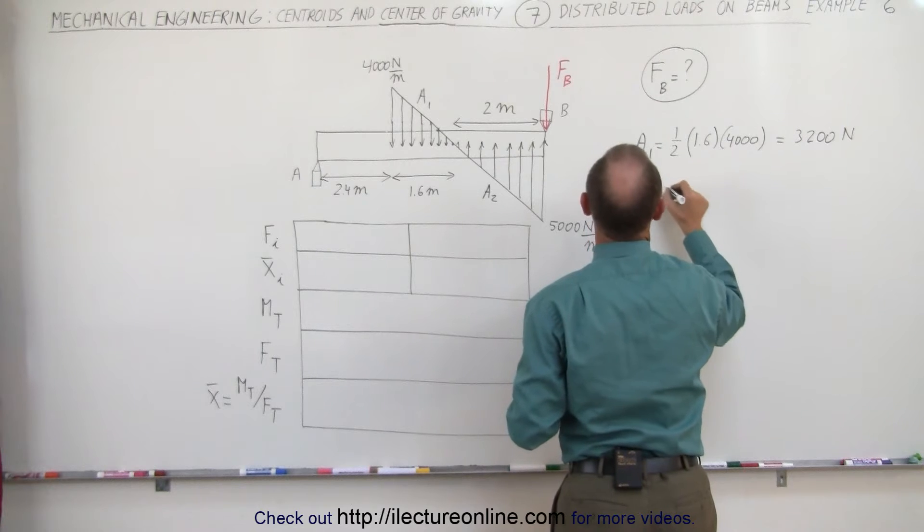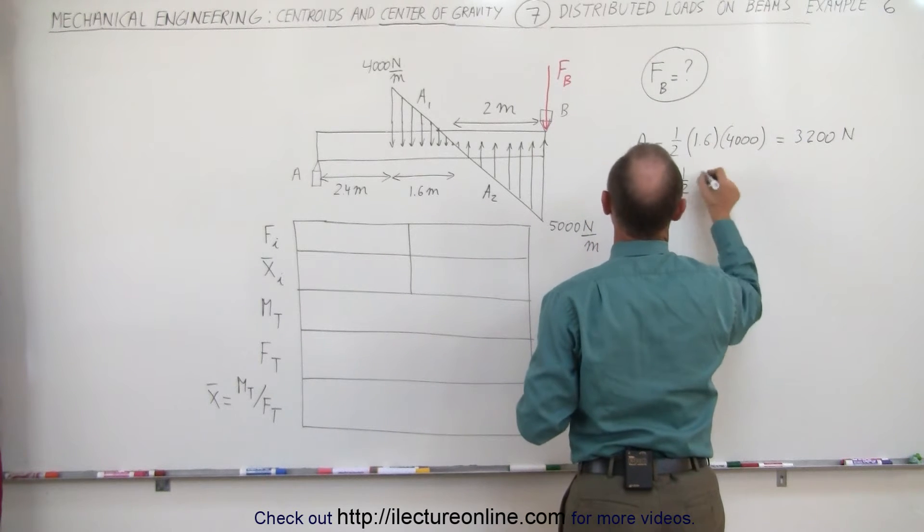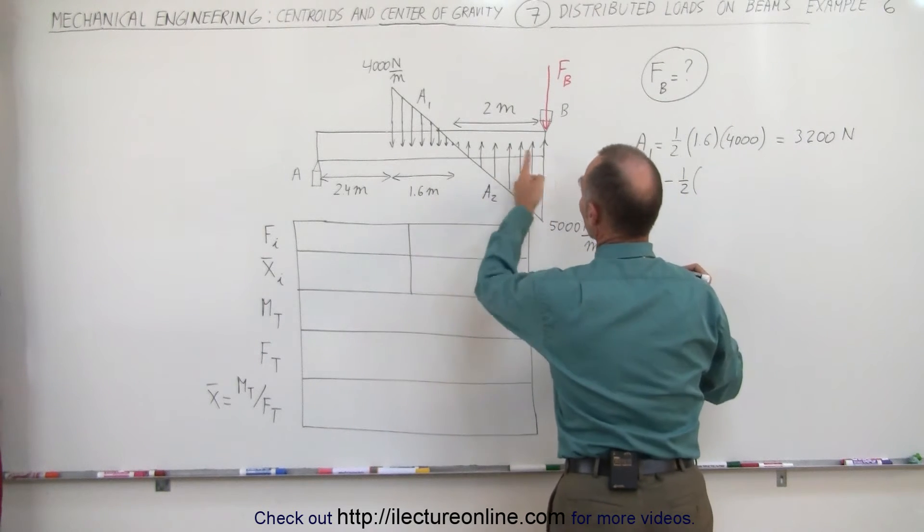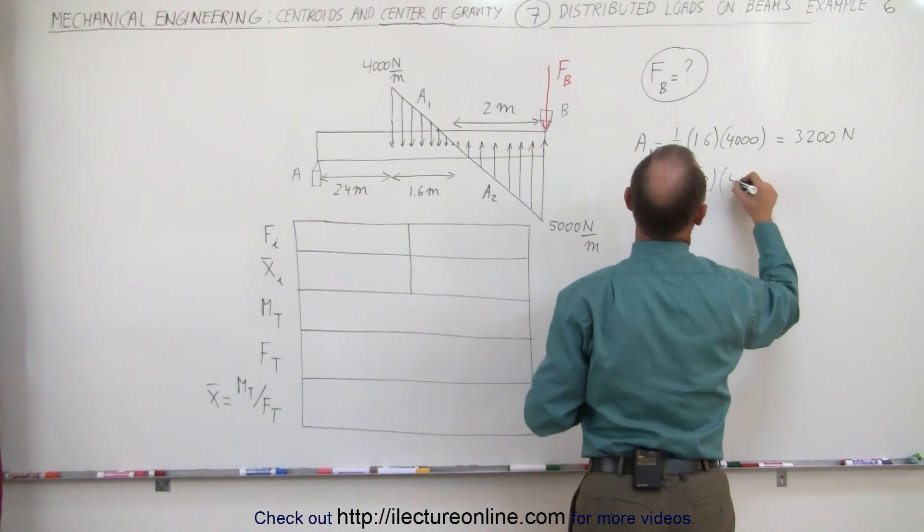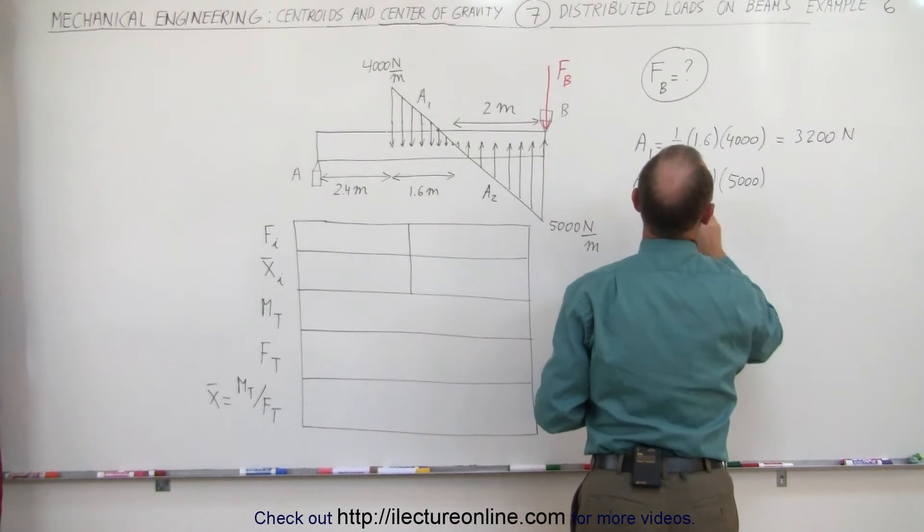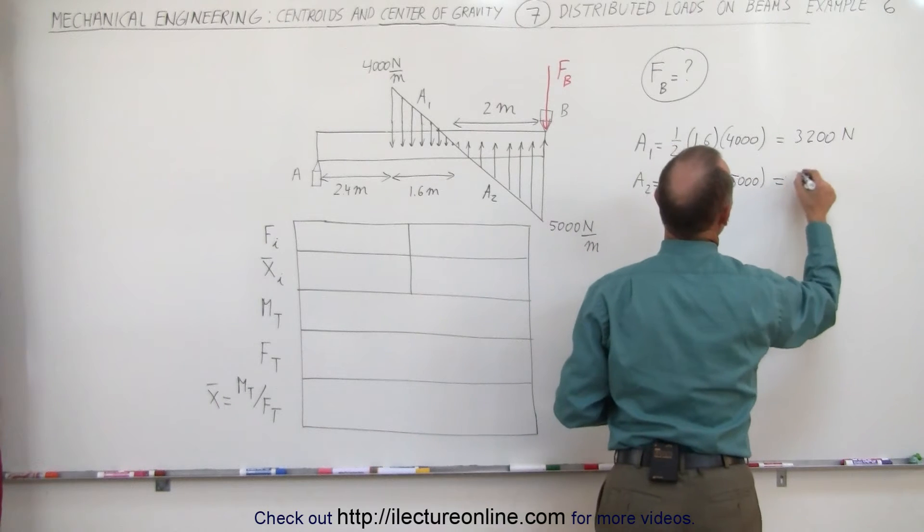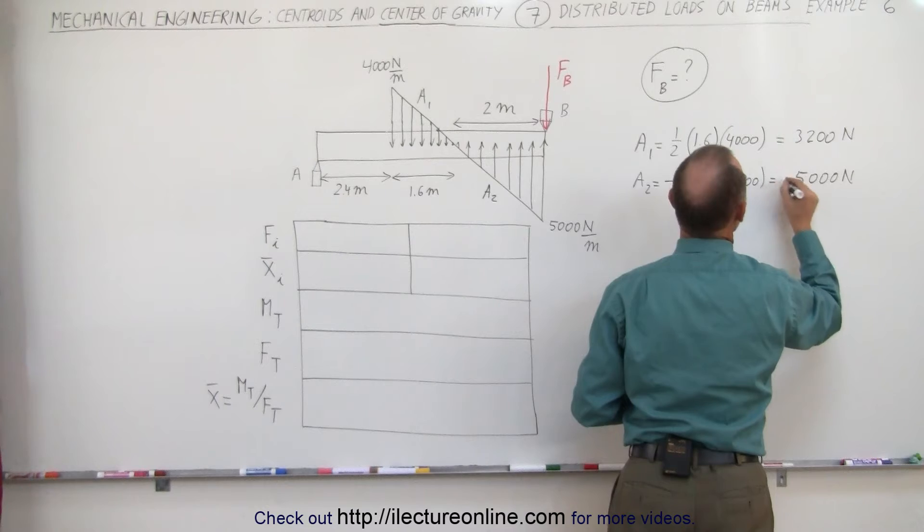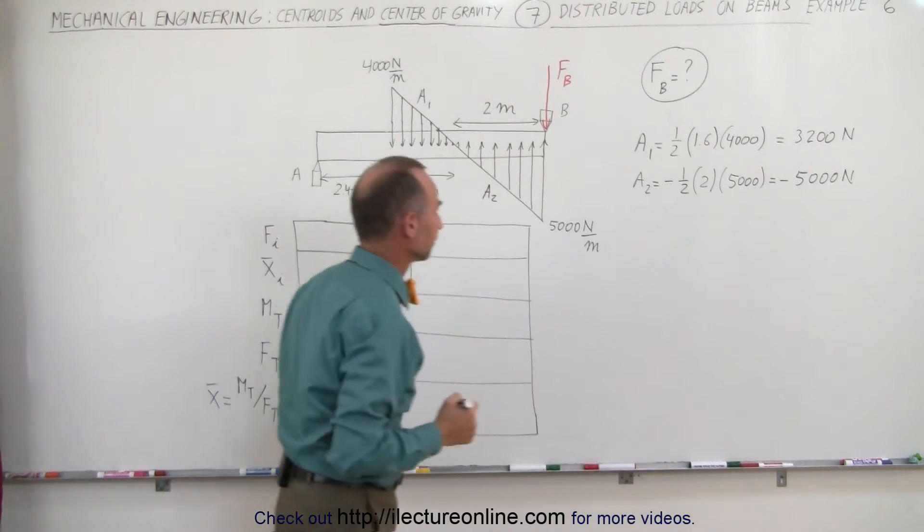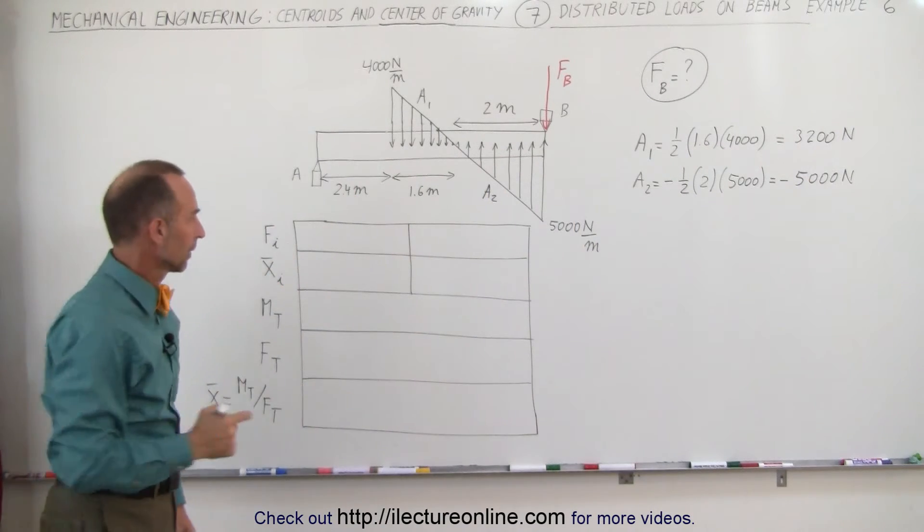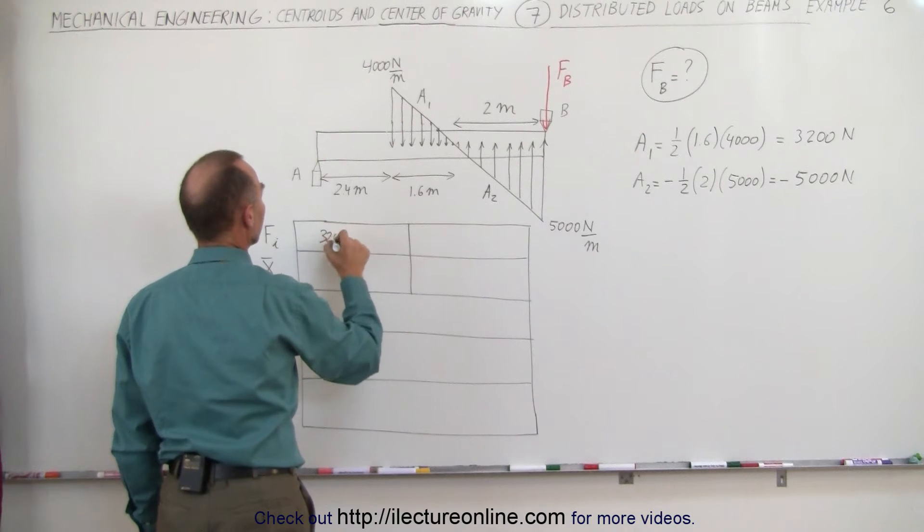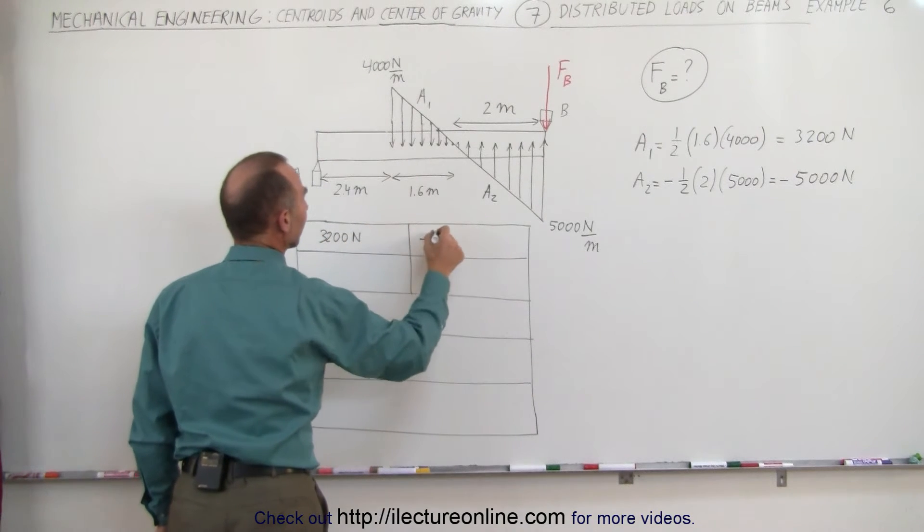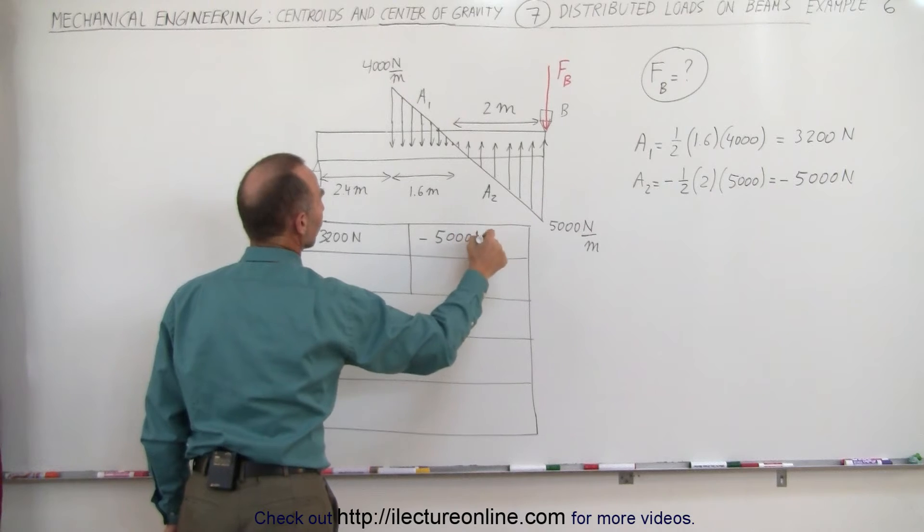A2 is equal to negative one-half times the base, 2 meters, times the height, 5,000. One-half times 2 cancels out. This gives us a 5,000 newton load but it's negative because it's pointing upward. The numbers are a positive 3,200 newtons and a negative 5,000 newtons.